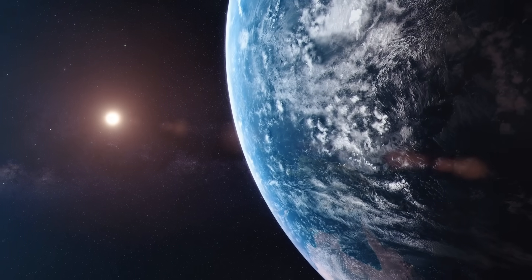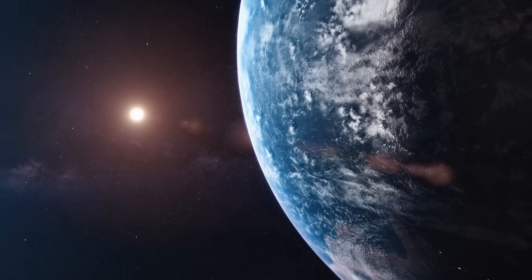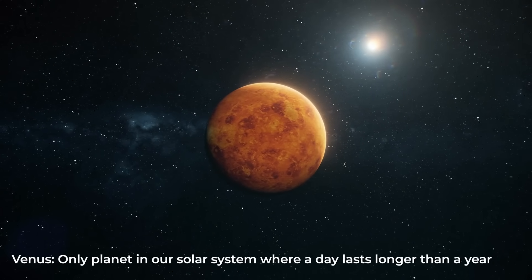If the Earth orbited Proxima Centauri, a day would be longer than a year. That is the same thing that happens to Venus, the only planet in our solar system where a day lasts longer than a year.